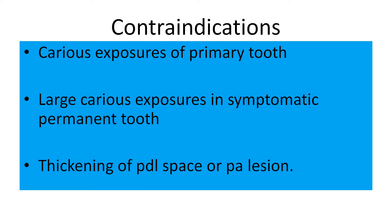Caries exposure of a primary tooth is also a contraindication. Thickening of the periodontal space or a periapical lesion, if present, are also contraindications. A periapical lesion of endodontic origin means caries progressed from enamel to dentine to pulp to periapical tissue, resulting in pulp necrosis. There is no point doing direct pulp capping when the pulp is necrosed — no reparative dentine formation will occur. Widening of the PDL space, indicating inflammation, also contraindicates the procedure.